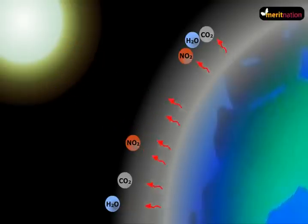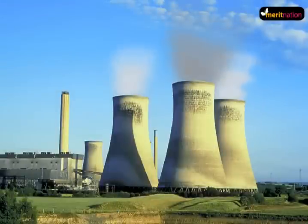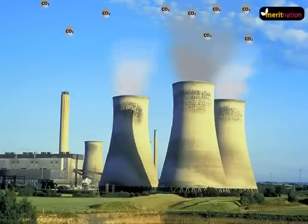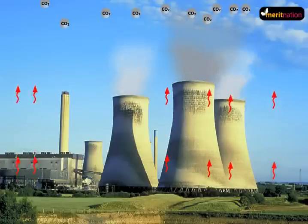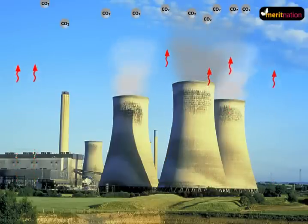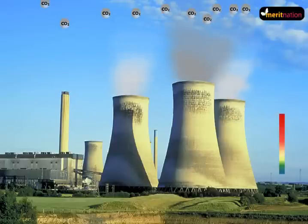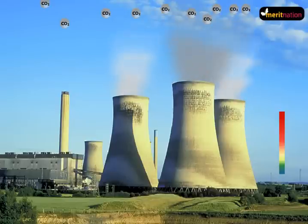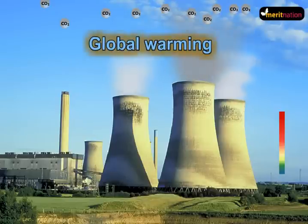Because of a number of human activities, the amount of carbon dioxide in the atmosphere is continuously increasing, and because of that more and more heat gets trapped in the atmosphere. The atmospheric temperature goes up, as it has been going up lately. So the greenhouse effect is causing the earth to slowly get warmer, and this is precisely the phenomenon commonly known as global warming.